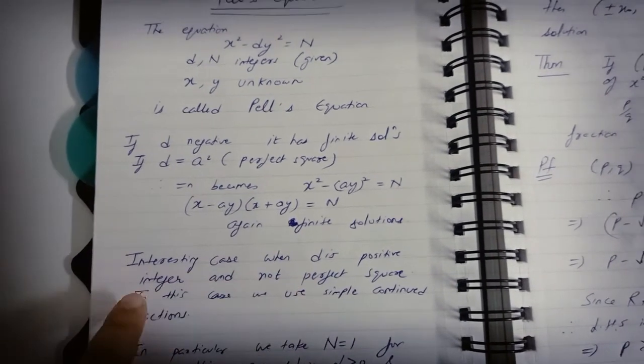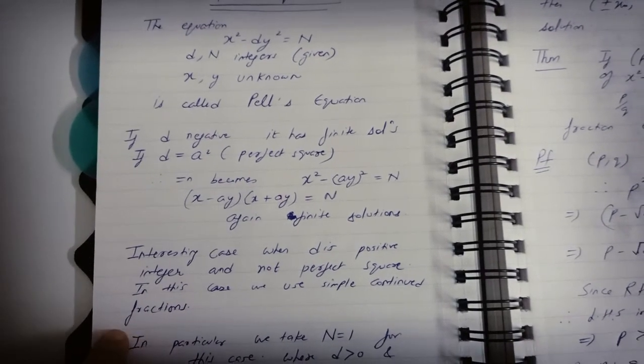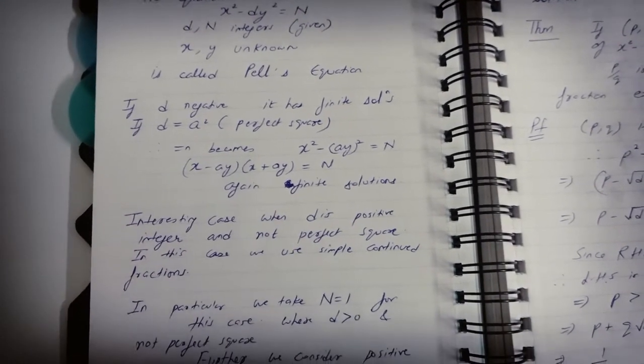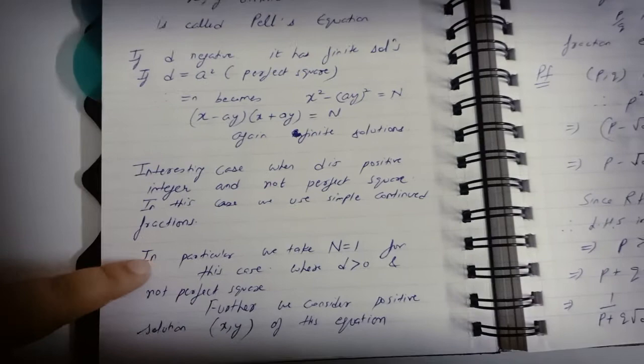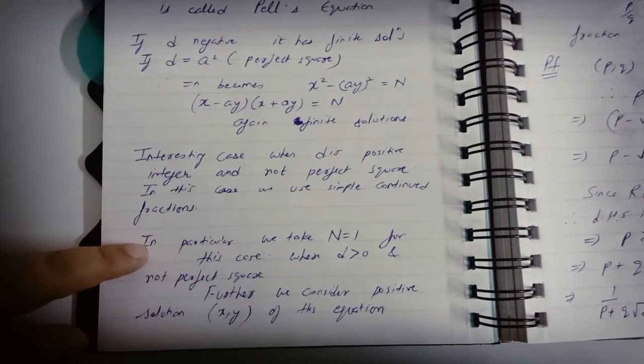But interesting cases occur when d is a positive integer and not a perfect square. In this case we use simple continued fractions. In particular, to analyze this interesting case, we take n = 1 and d > 0 and not a perfect square.